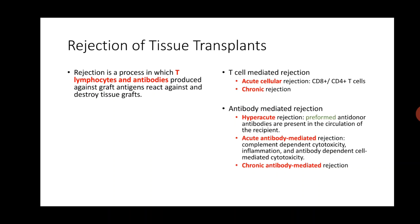Humoral rejection, or antibody mediated rejection, can be of three types: hyperacute rejection, acute antibody mediated rejection, and chronic antibody mediated rejection. Let us understand the mechanism of rejection in some more detail.